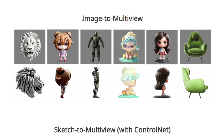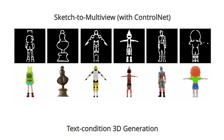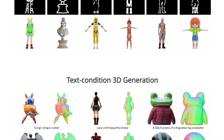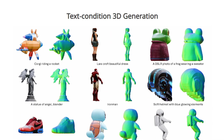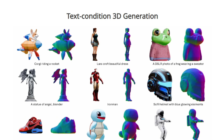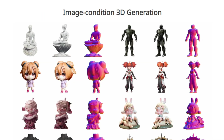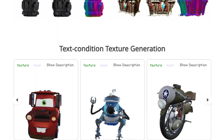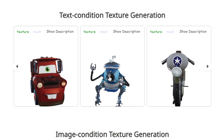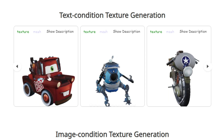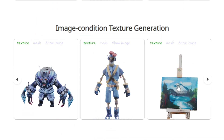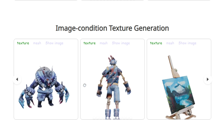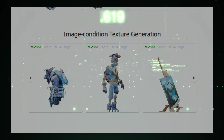The condition guider encodes camera parameters or geometric information, while the decoupled attention layers learn multiview consistency. These layers can also include image cross-attention layers to support image condition generation. MV Adapter achieves multiview generation at 768 resolution on Stable Diffusion XL (SDXL). The paper highlights MV Adapter's adaptability through applications including text-to-multiview, image-to-multiview, and sketch-to-multiview generation, as well as 3D and texture generation using both text and image conditions. The results demonstrate that MV Adapter sets a new quality standard for multiview image generation.